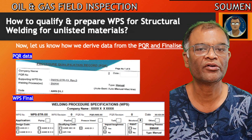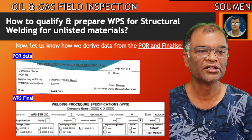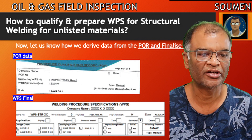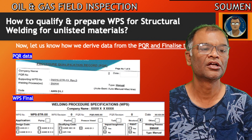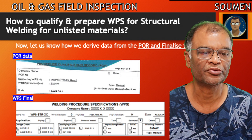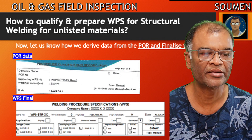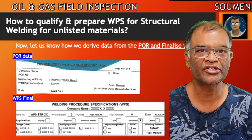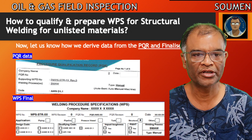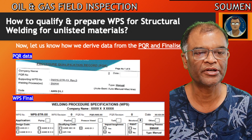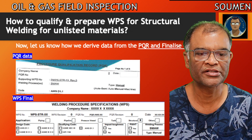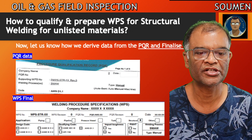First of all, the information block — this is straightforward, just like the pre-qualified WPS. You need to put the structural WPS name, your company name, and the revision number. Since it is the first one, revision will be 0. Then the PQR number assigned by the third party is entered, and PQR revision is also 0.